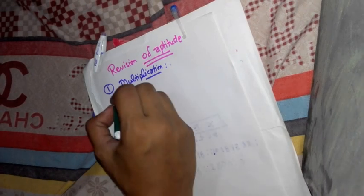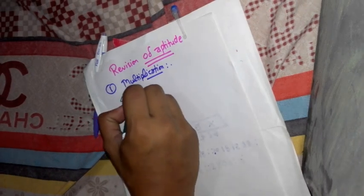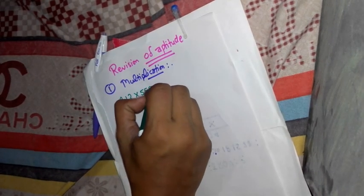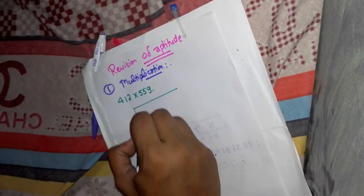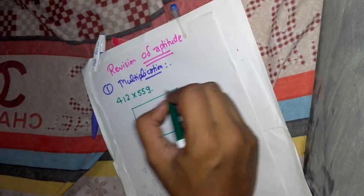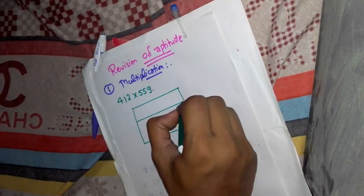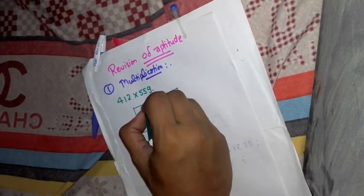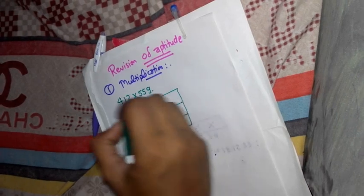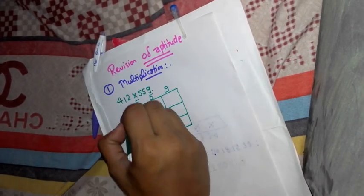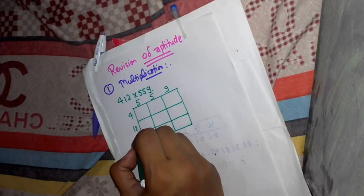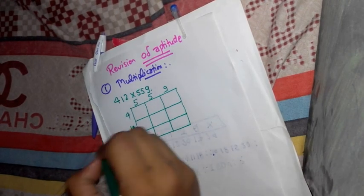That is 412 times 559. Make a 5, 1, 3, 1, 2, 3. Let's do number 5, 5, 9, 4, 1, 4, 1, 2.